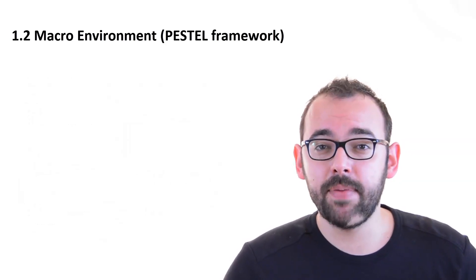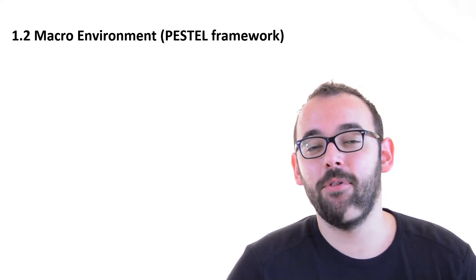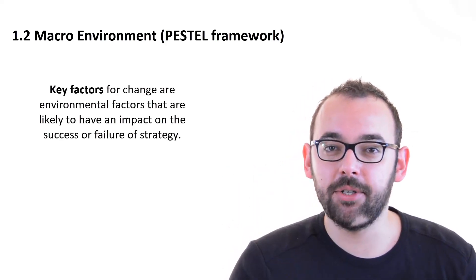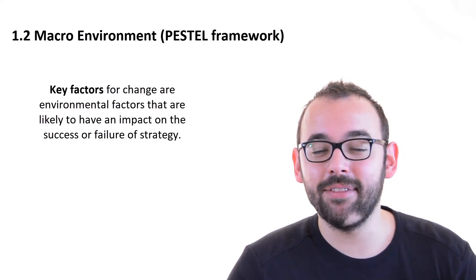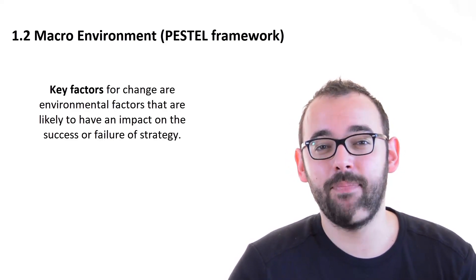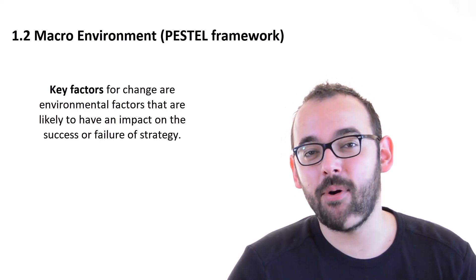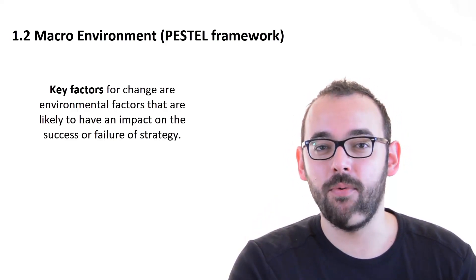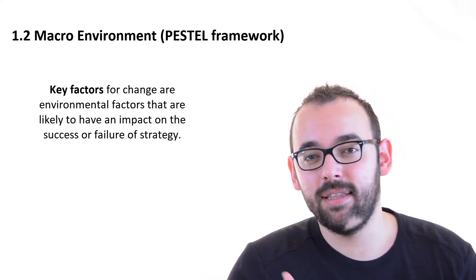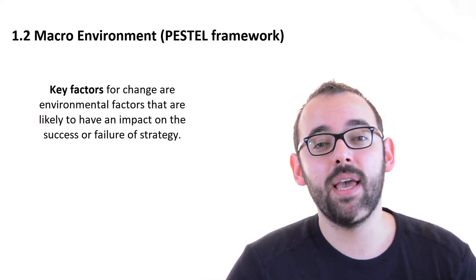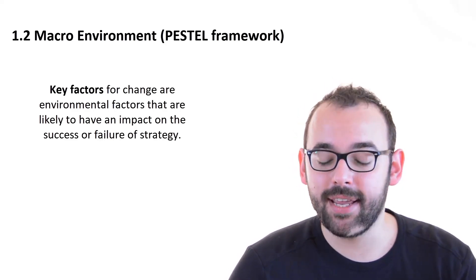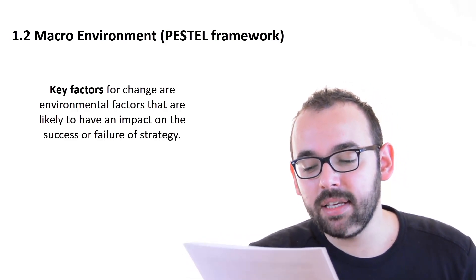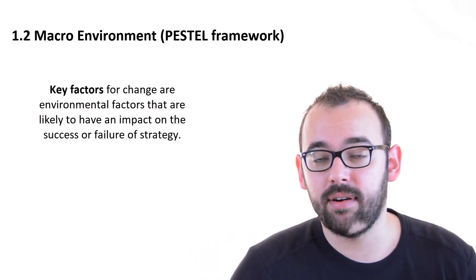Alright. So, we have seen the basic outline of the PESTEL framework. If we were following it, we could identify hundreds of forces and factors that are influencing our business within these six major areas. However, listing hundreds of these forces is not the point of PESTEL framework. I see this mistake actually being done quite often by business students who pick PESTEL framework as their model to go for some business analysis and then they are listing and listing all these forces. However, it should be about listing of key factors or key factors for change within our business. Key factors for change are environmental factors that are likely to have an impact on the success or failure of strategy.